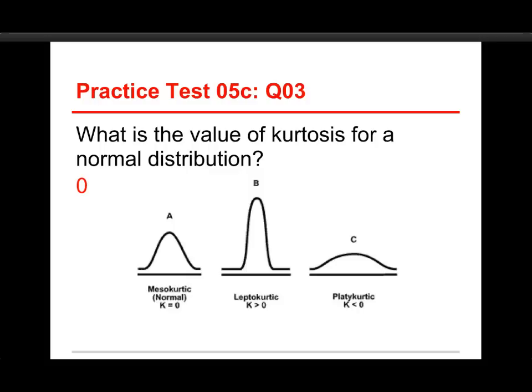Next to it, B, a leptokurtic distribution, which means a skinnier, thin bulge. It has a positive value of kurtosis, so it's greater than 0. And the one on the far right, C, is a platykurtic distribution, which means a flat bulge, and it has a negative value for kurtosis. But a normal distribution has a 0 value for kurtosis as well as for skewness, and that's just something to keep in mind for the test.